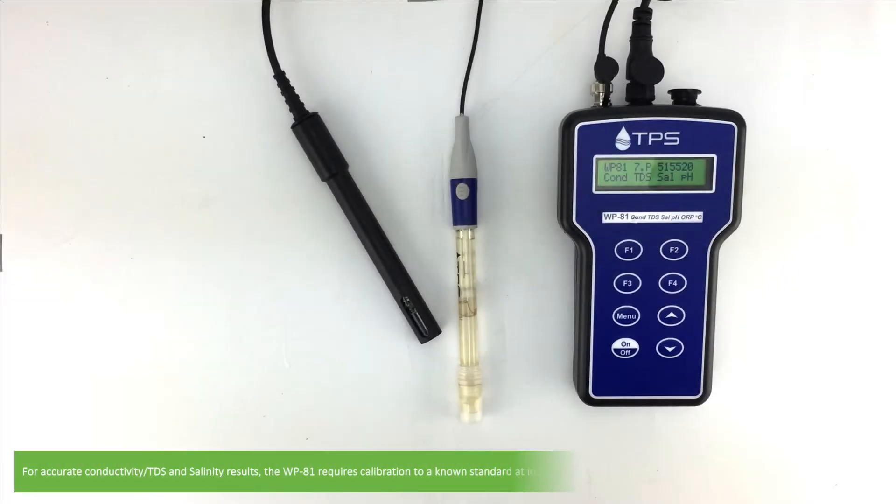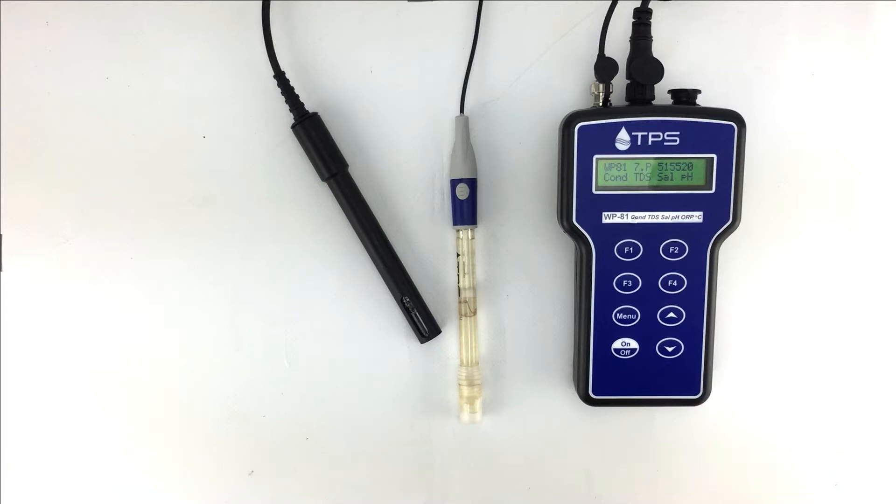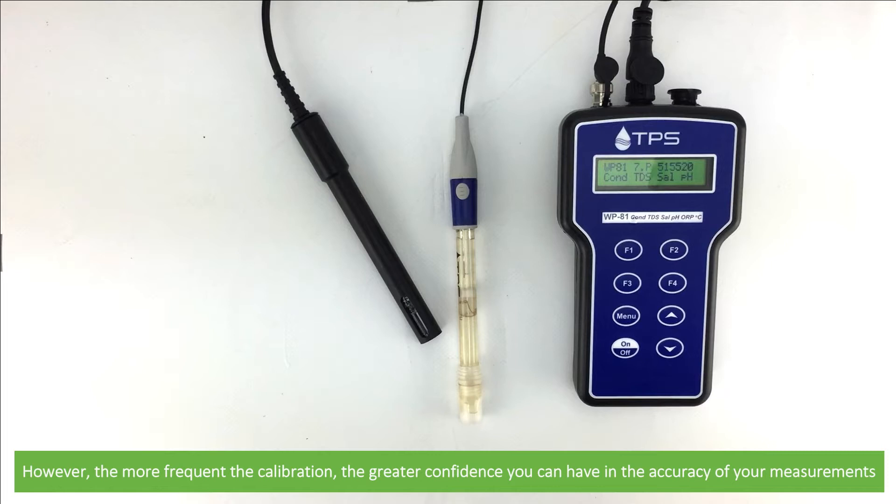For accurate conductivity, TDS, and salinity results, the WP81 requires calibration to a known standard at least weekly. Zero calibration should also be performed at least monthly. However, the more frequent the calibration, the greater confidence you can have in the accuracy of your measurements.